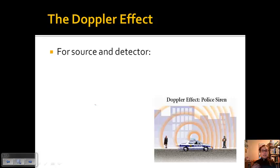Let's talk about how to calculate the Doppler effect or how to calculate speed based on the Doppler effect. For the source and the detector, D is going to represent the detector and S is going to represent the source.